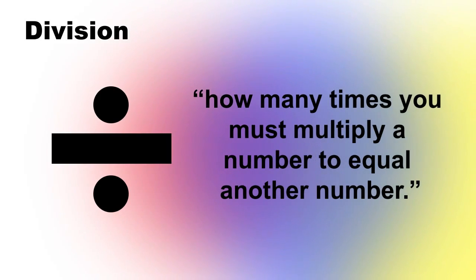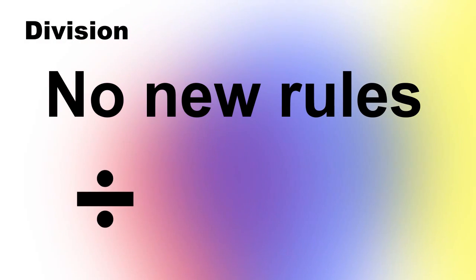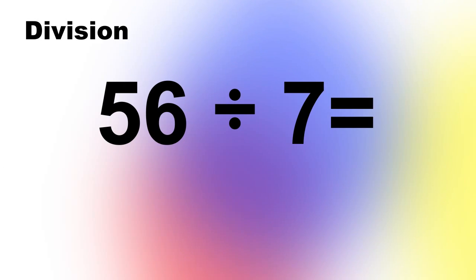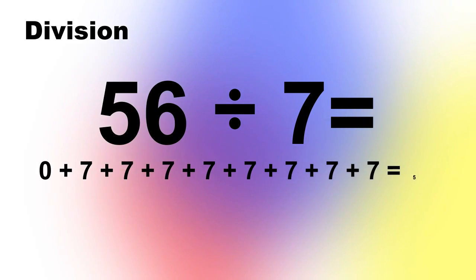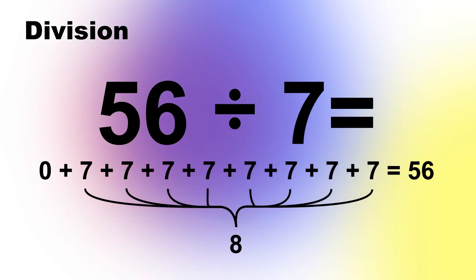We can build division off of multiplication by defining it as how many times you must multiply a number to equal another number. Notice that there are still no more new rules. Division is based solely on multiplication, which we built off of addition. So to divide 56 by 7, we do 0 plus 7 plus 7 plus 7 and count the 7s until we get 56. In this case, there are 8 7s.